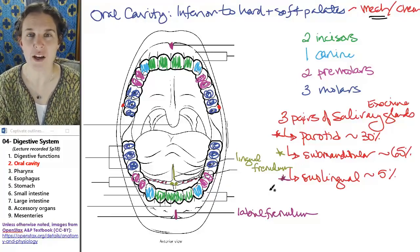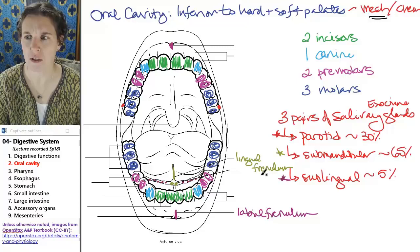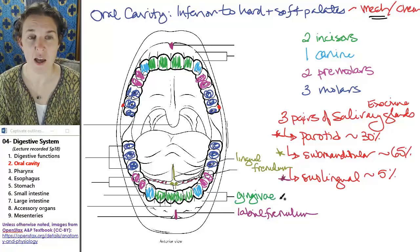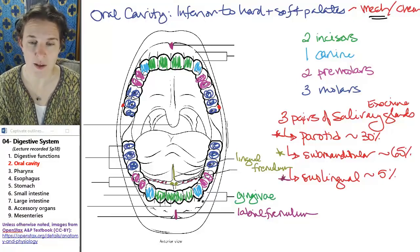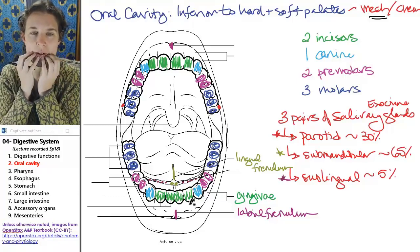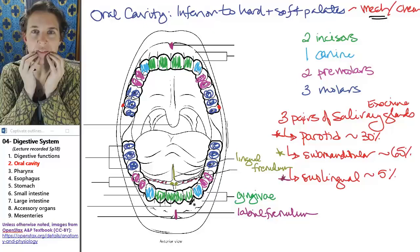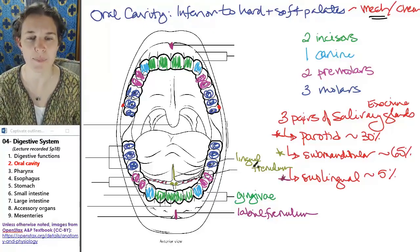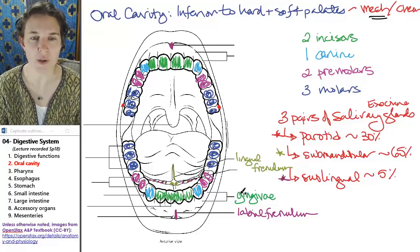You also have gingivae. I actually don't know how to pronounce that. Gingivae. Basically, those are your gums. Your teeth are held into your mandible. Your gingivae, your gums surround your teeth, that little joint, and protect that joint.